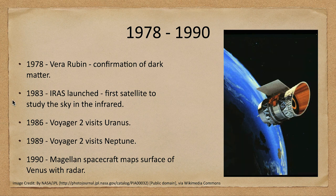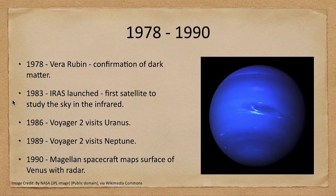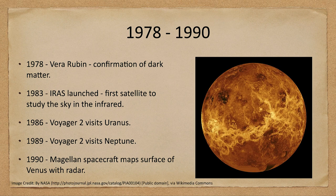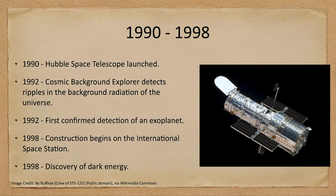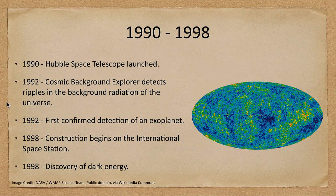Over the later 1980s, we visited Uranus and Neptune, exploring two more planets in the outer solar system. Venus cannot be mapped in visible light from outside, but the Magellan spacecraft fully mapped Venus by radar in 1990. Continuing into the 1990s, we saw the launch of the Hubble Space Telescope to explore the universe in visible light from above the atmosphere. Also in 1992, the COBE satellite — the Cosmic Background Explorer — detected ripples in the background radiation of the universe, telling us about the earliest structures forming after the Big Bang.